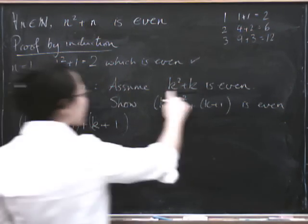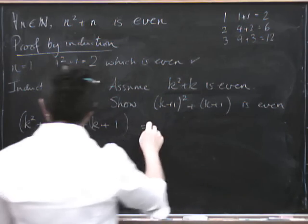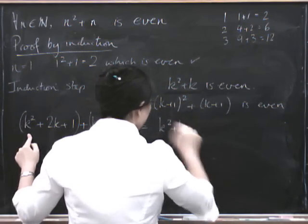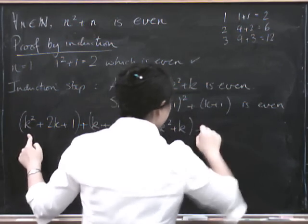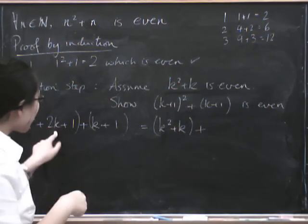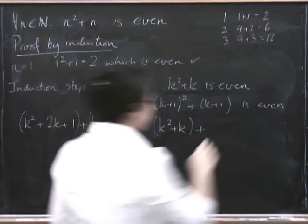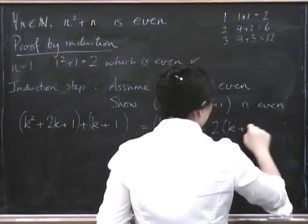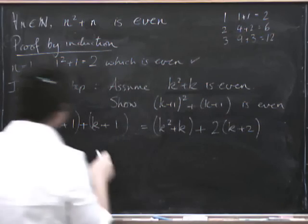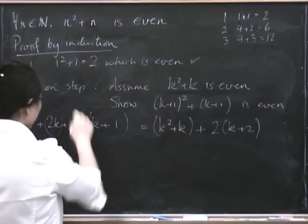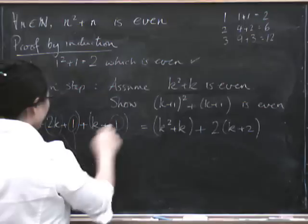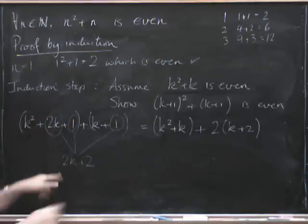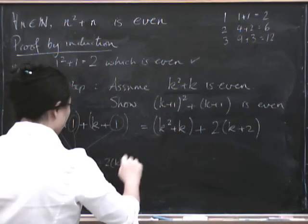Well, now we know that k squared plus k is even, right? So let's take out k squared plus k. We're just going to rearrange things a bit. And then what do we get left? We get 2k plus 2. Because we've got 2k here and a 1 and a 1, which makes 2k plus 2.